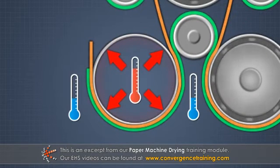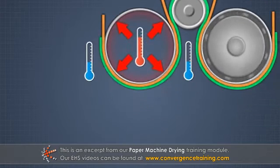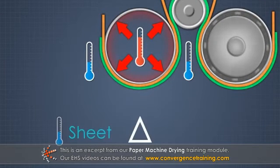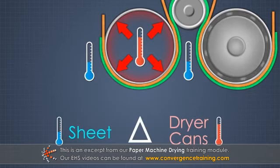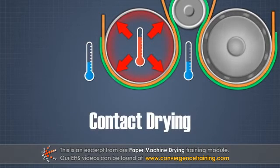In multi-cylinder drying systems, the driving force for heat transfer is the temperature difference between the sheet and the dryer cans. This process is called contact drying because the sheet directly contacts the dryers.